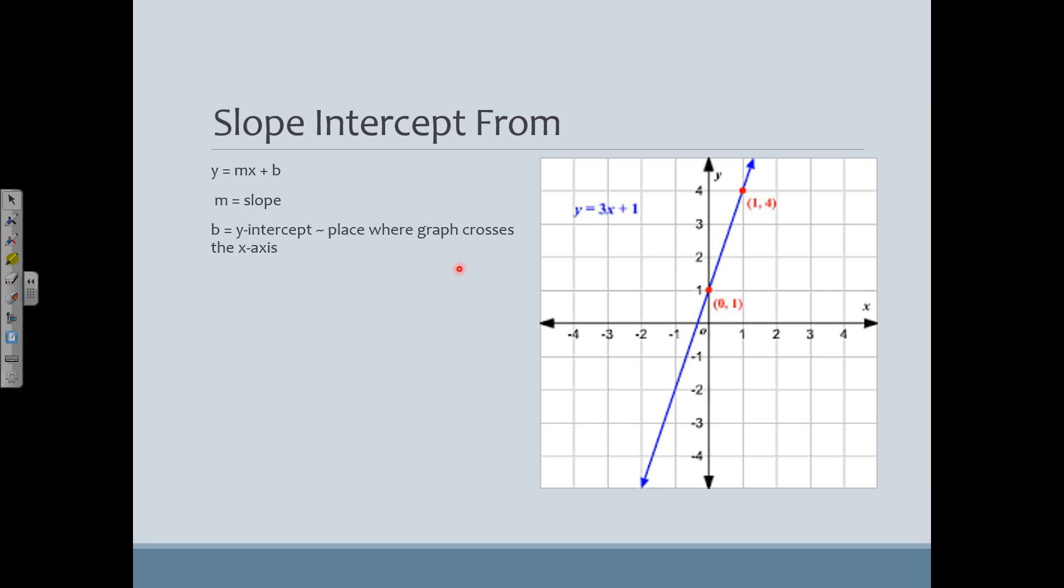So we have this line over here, y equals 3x plus 1. With that line, our slope is 3, and our y-intercept, which is b, is going to be either 1 or the point (0, 1). Same thing, just different ways to write it.